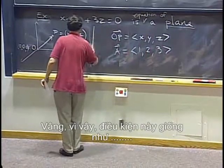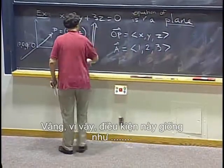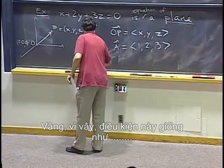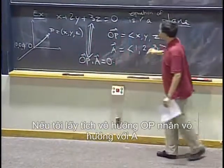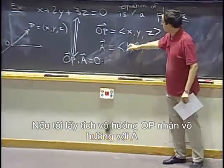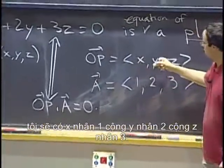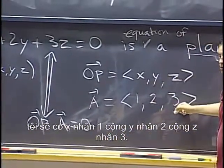So this condition is the same as OP dot A equals 0. If I take the dot product OP dot A, I get x times 1 plus y times 2 plus z times 3.